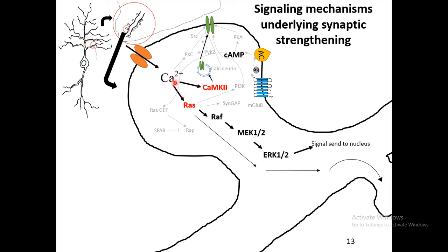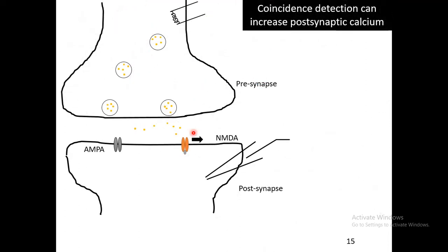Decades of work has summarized that there are certain signaling pathways through which calcium can give rise to plastic changes. There are certain decoder molecules which can read the spatiotemporal dynamics of calcium and write plastic changes at the level of synapses. One such important player in synaptic plasticity is the NMDA receptor — the NMDA receptor is known as a coincidence detector.